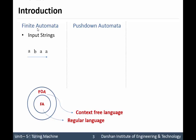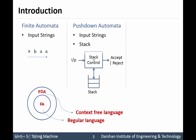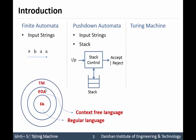Due to this, FA has very limited power. In the case of PDA, apart from the input string we have a stack, and due to the stack, PDA is different from FA. We can say PDA is nothing but a combination of FA plus stack. However, there is a limitation of pushdown automata: we can access only the top element from the stack, so we cannot access any random element of the stack. Some languages cannot be accepted by pushdown automata either. This limitation can be overcome by Turing machine. In short, the limitation of FA can be overcome by PDA, and the limitation of PDA can be overcome by Turing machine.